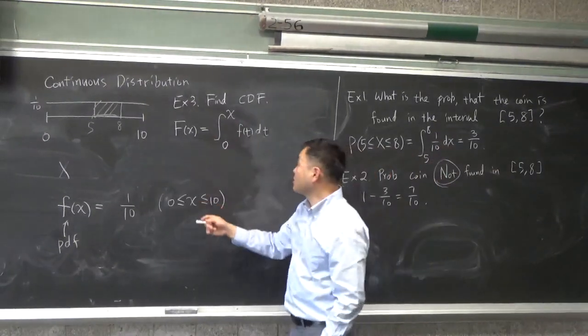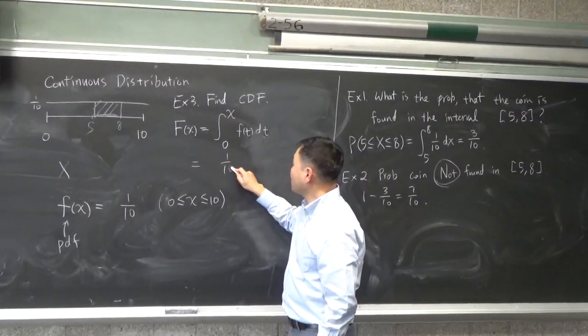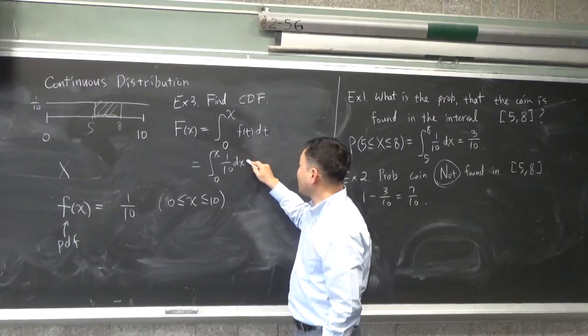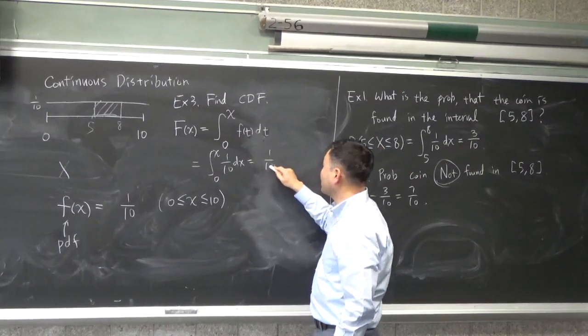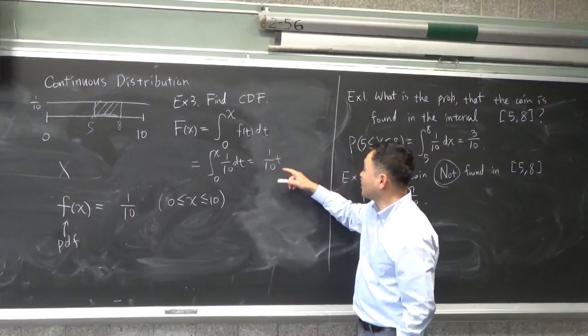Same idea here. We're just integrating. So, what is that? That's 1/10. If you integrate 1/10 from 0 to x, that's going to be 1 over 10 dt.